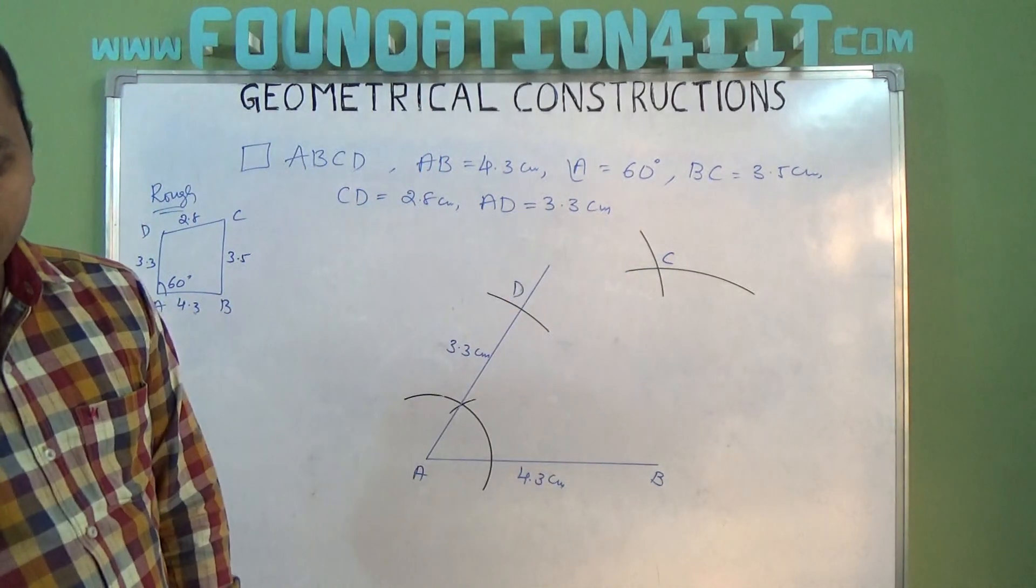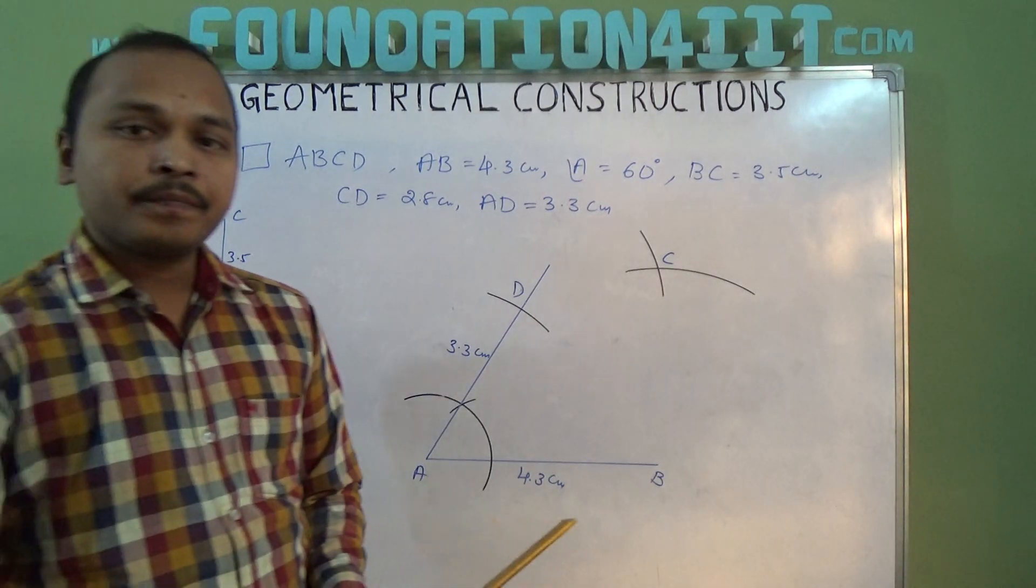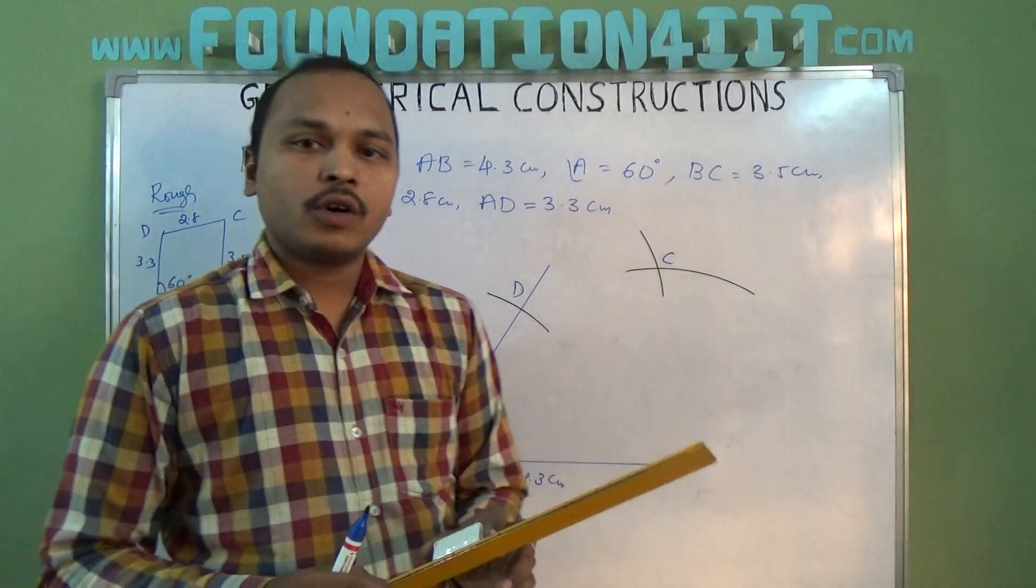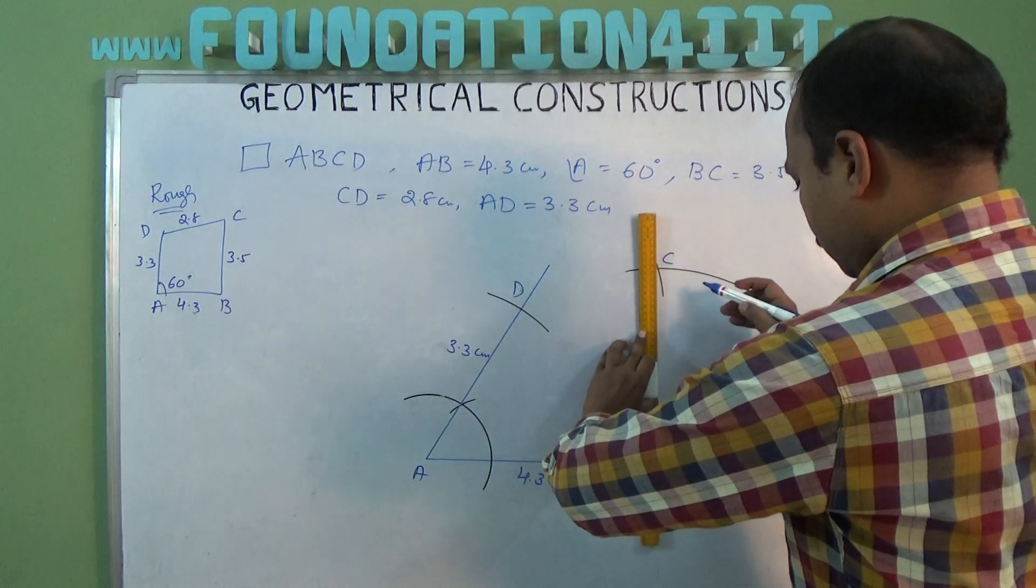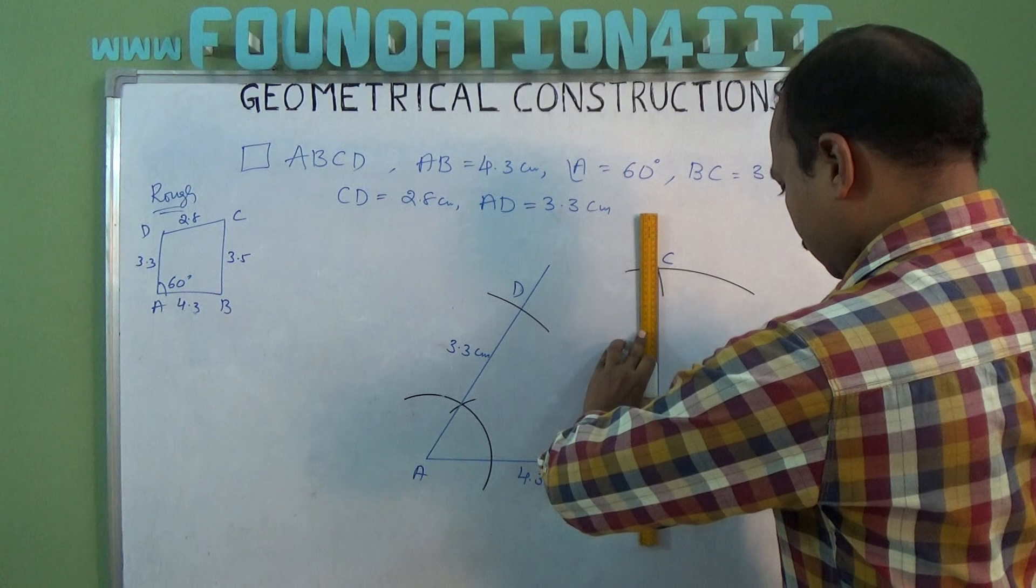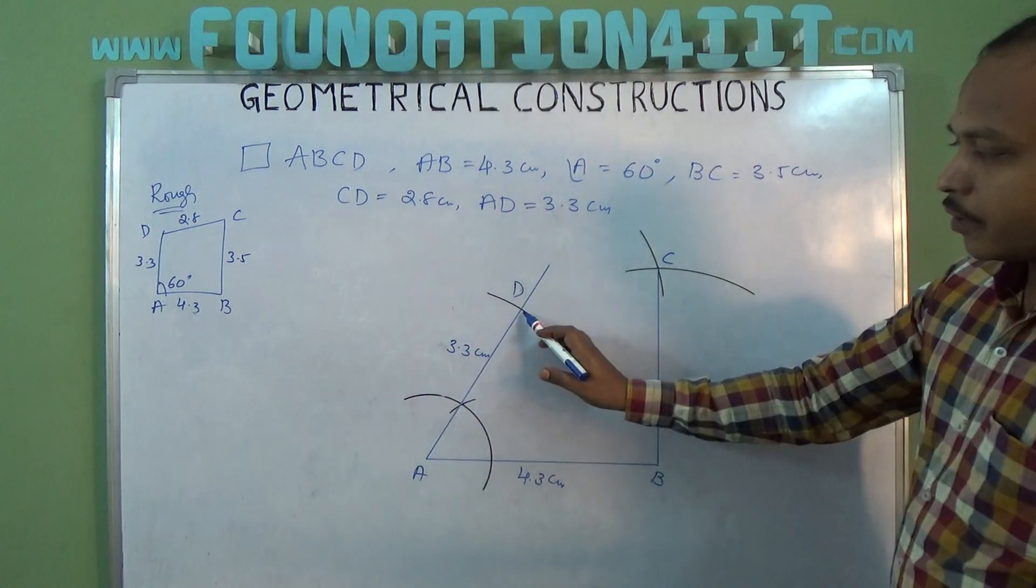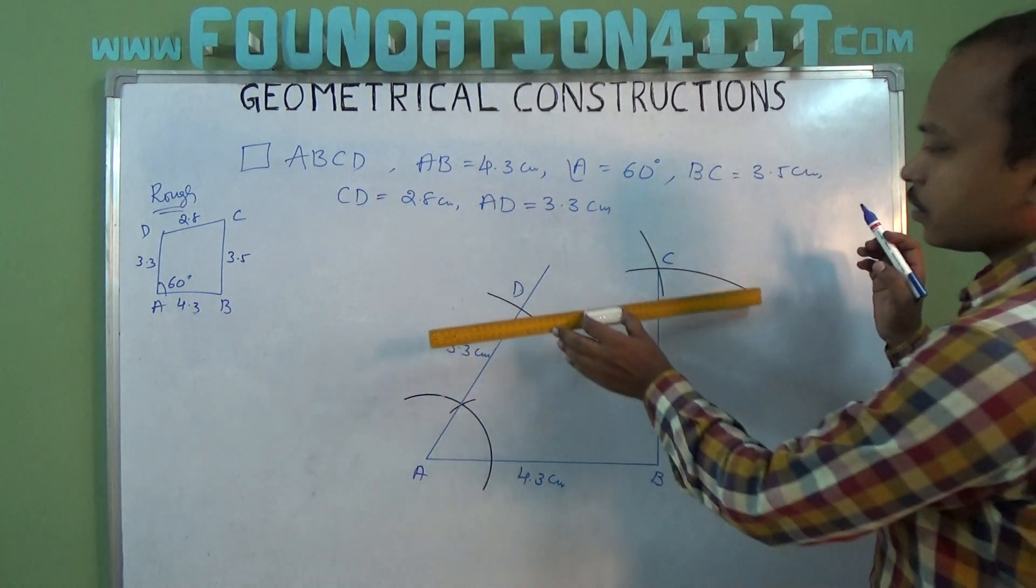Now just join using the scale all the vertices. Join B to C. This is the D point, and D to C also just join.